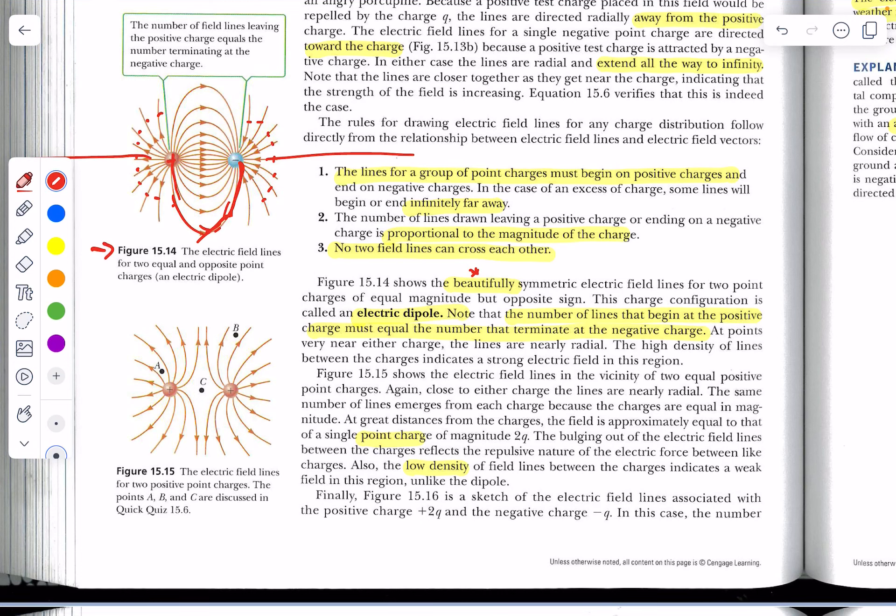A couple of points. Number one, the lines for a group of point charges must begin on positive. In some cases, they can end up or come from an infinite distance. Number two, the stronger we want to say an electrical field is, we're going to represent it with more lines. And something that may not have been obvious but should be intuitive, and that is that no two field lines can cross each other. You're not going to have one field line sort of going like this, crossing it. Impossible.